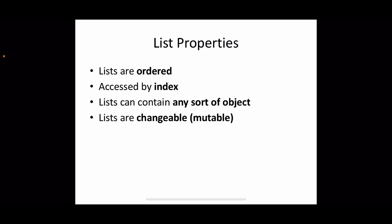The different list properties are: first, lists are ordered; second, they can be accessed by index; third, they can contain any sort of objects; and fourth, lists are changeable or mutable. Ordered means the items are arranged in a particular order and we can access individual elements by specifying the position, or index. Lists can contain heterogeneous data types, and once assigned, a list can be modified — individual items can be changed.